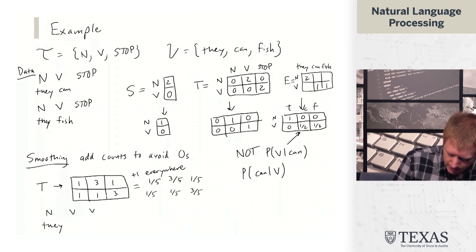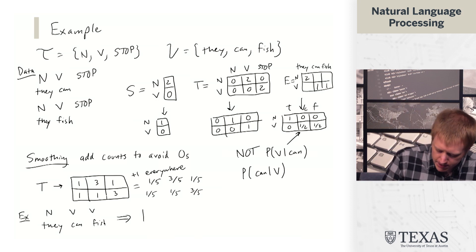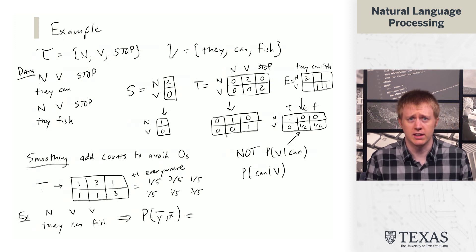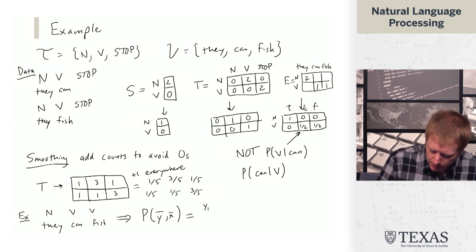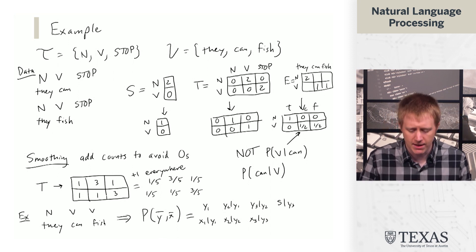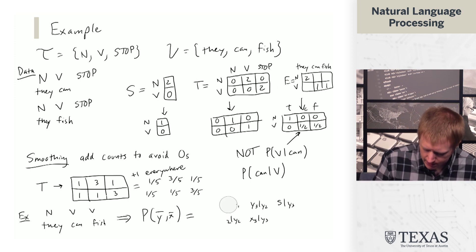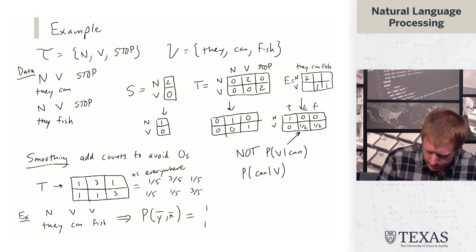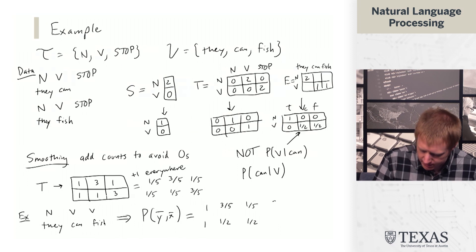So this tells us how to estimate these parameters. So now, given an example like they can fish, what you should be able to do is compute the joint probability of this example here, given these estimated parameters. And if we do that, so we have to think about y_1, x_1 given y_1, y_2 given y_1, x_2 given y_2, y_3 given y_2, x_3 given y_3, and then stop given y_3. And the numbers you get for these are one, one, three-fifths, one-half, one-fifth, one-half, and three-fifths.